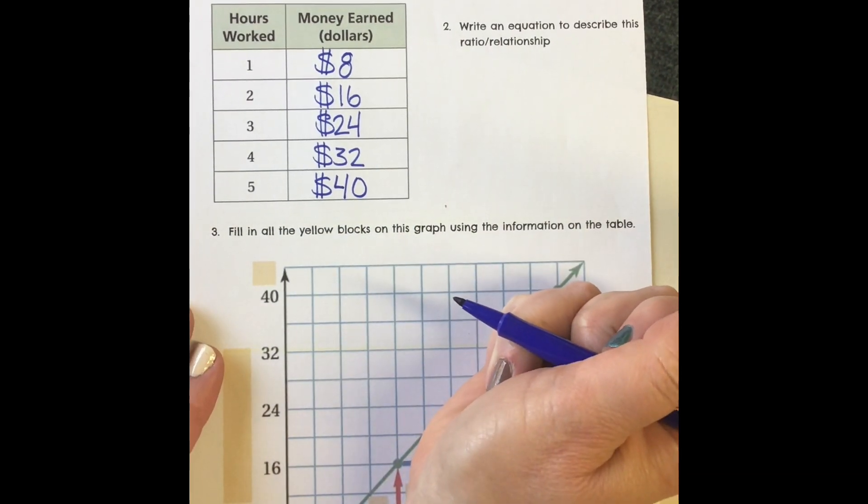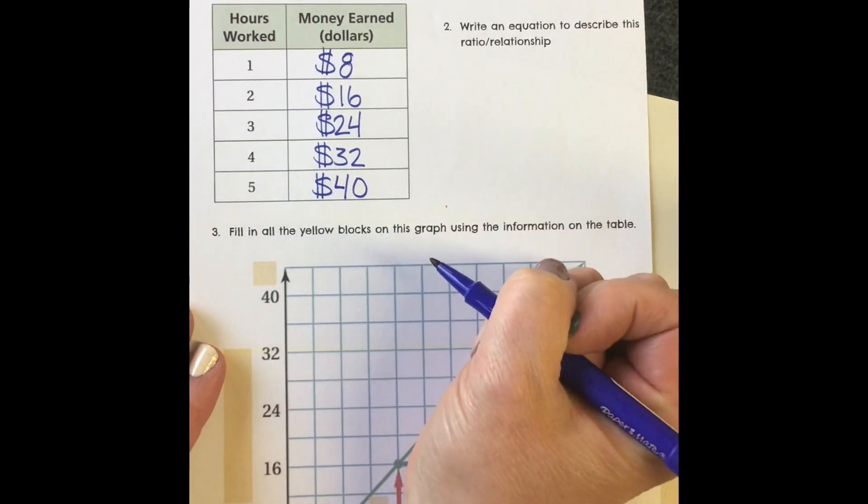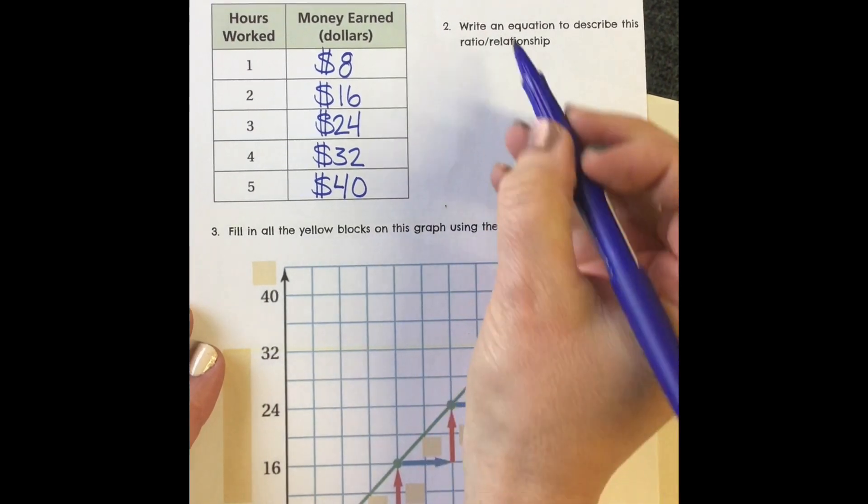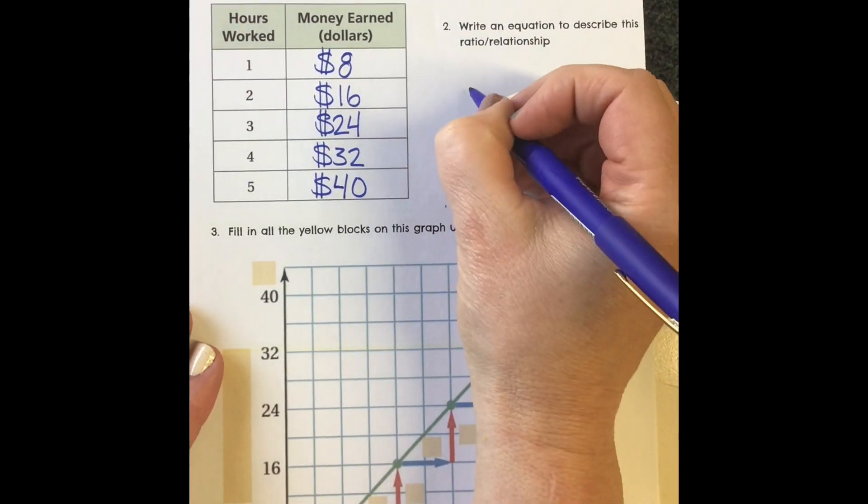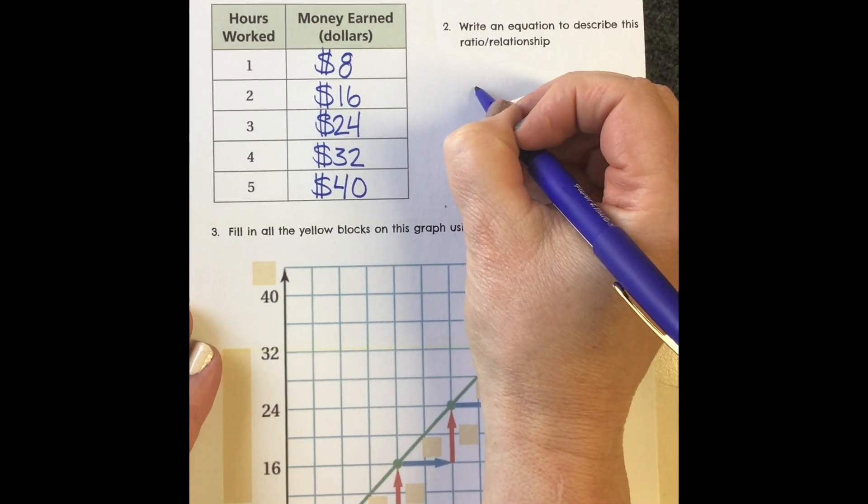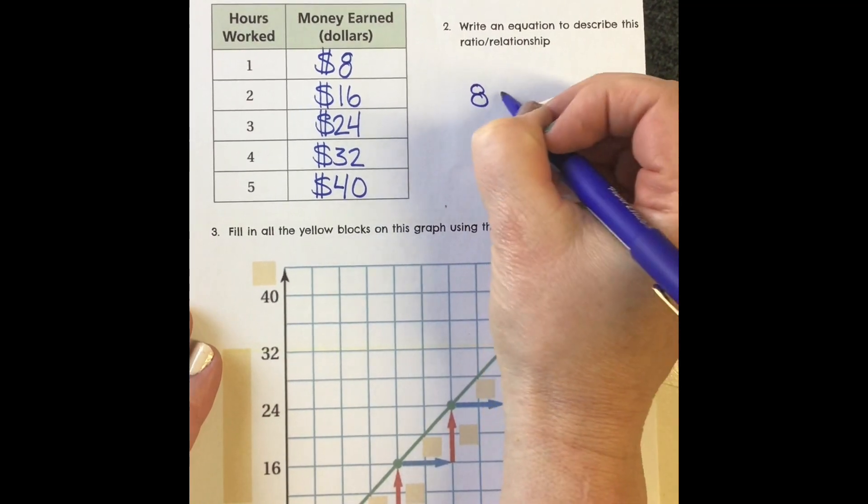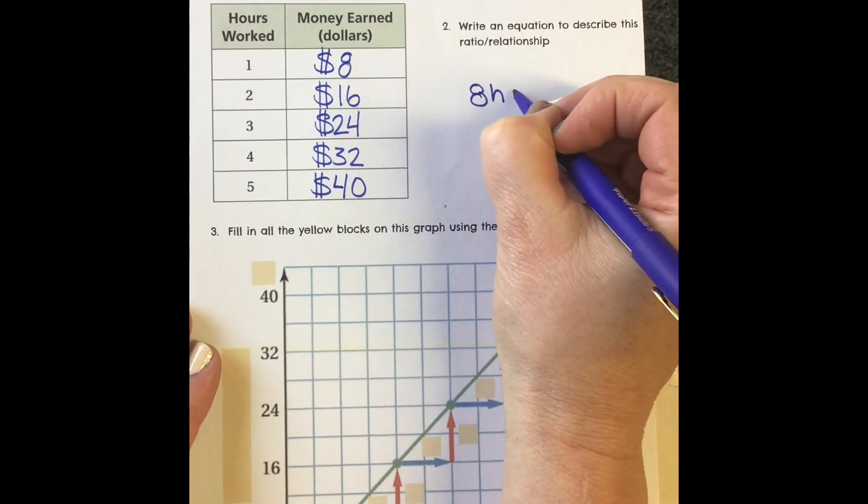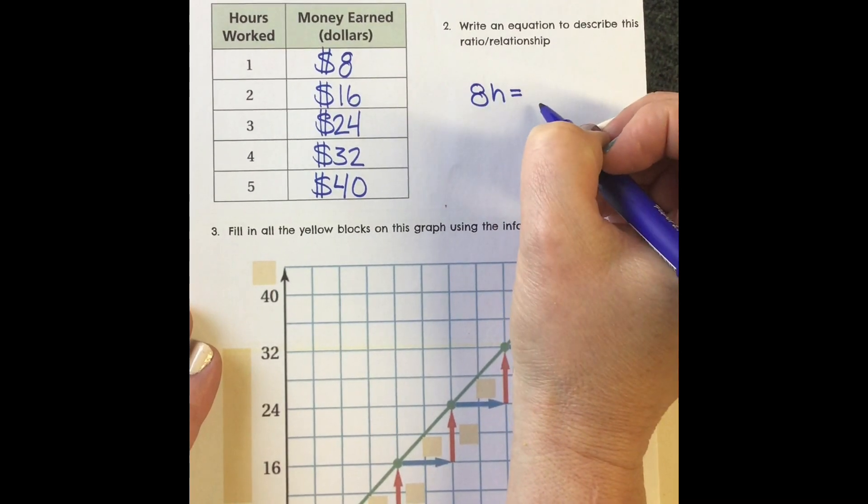Remember from the previous slide, if we're writing an equation for this, we might say something like 8 times the number of hours equals the amount of money.